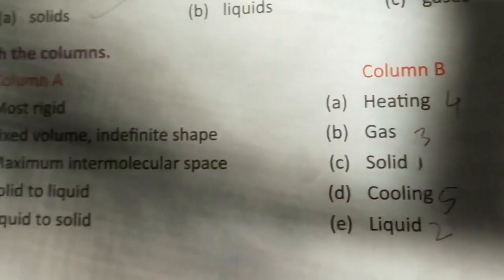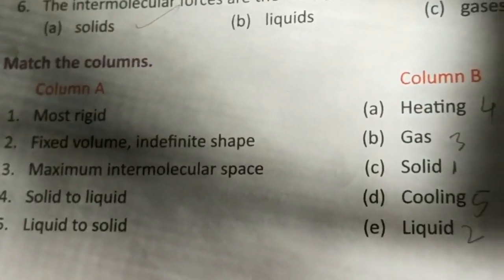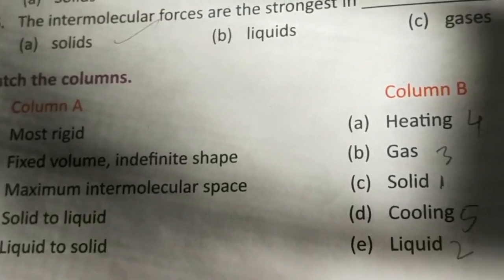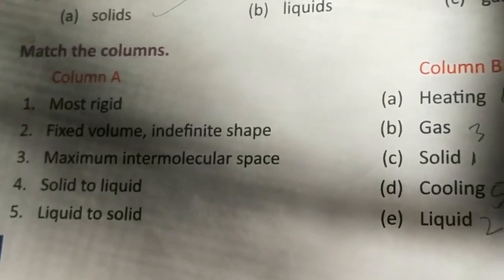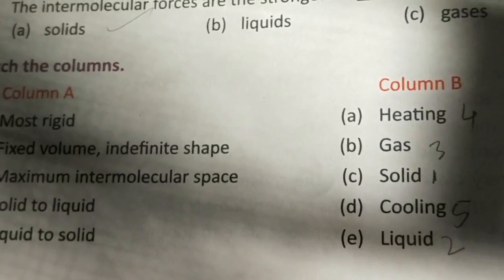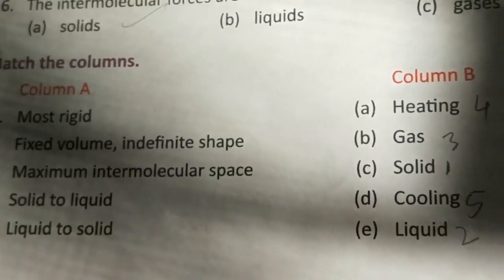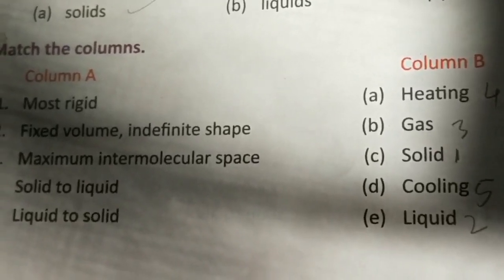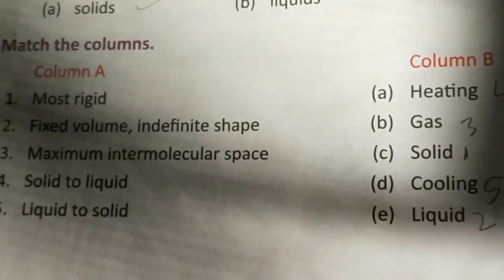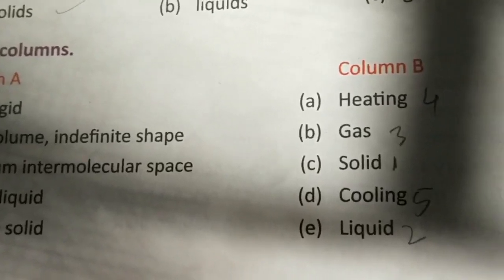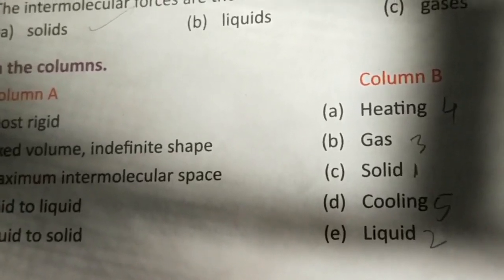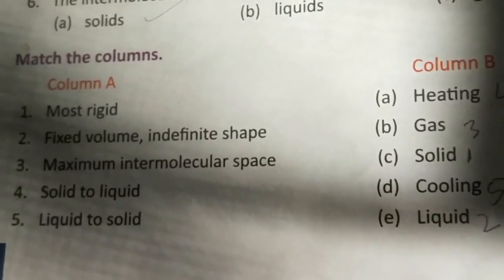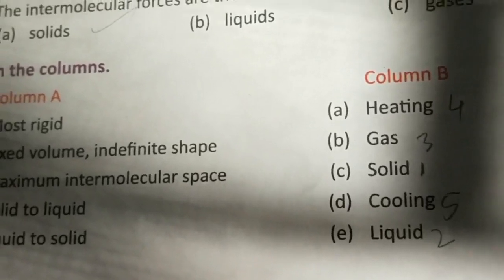Question D: match the following. Most rigid — that will be solid. Fixed volume and indefinite shape — that is the characteristic of liquid. Maximum intermolecular space — that will be gases. Solid to liquid is called melting, by heating. Liquid to solid is called freezing, by cooling.